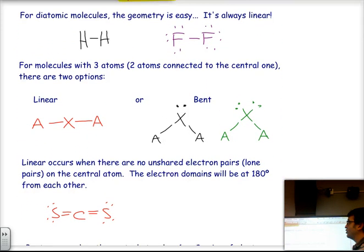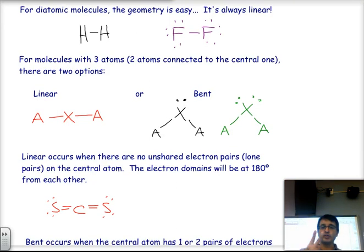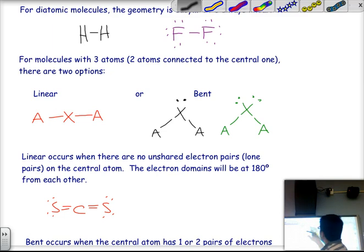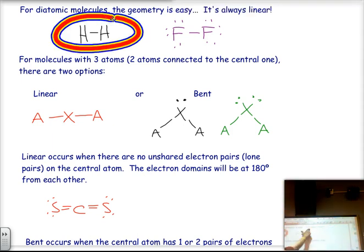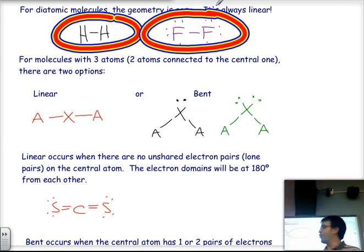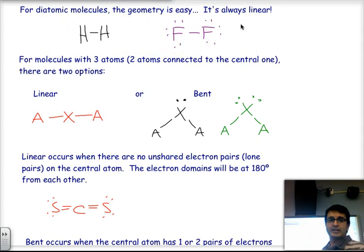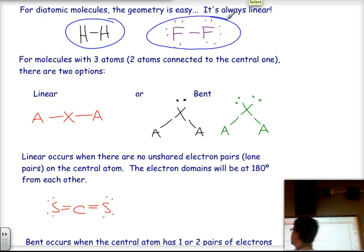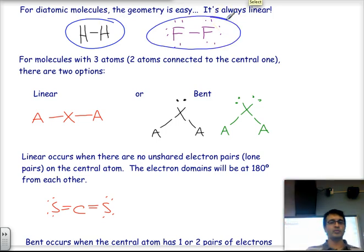If you have diatomic molecules — made out of two atoms — the geometry is very easy. It's always going to be linear. These molecules will just take this linear shape, kind of like cigars. The shape of the molecule follows the location of the atoms.